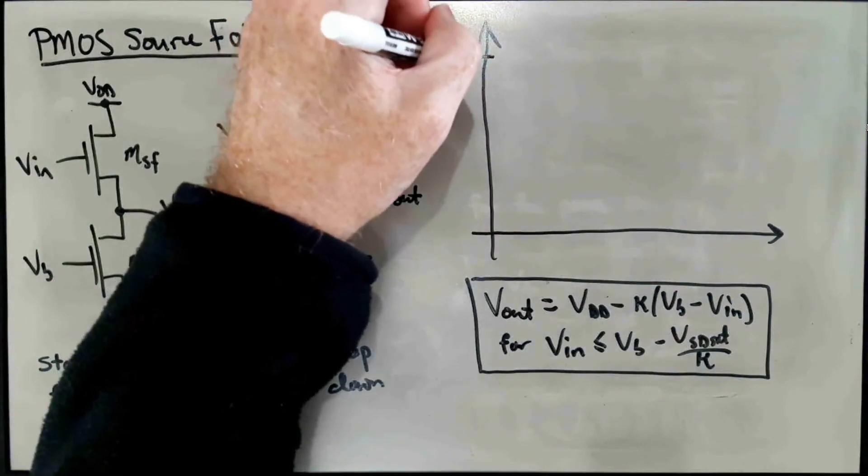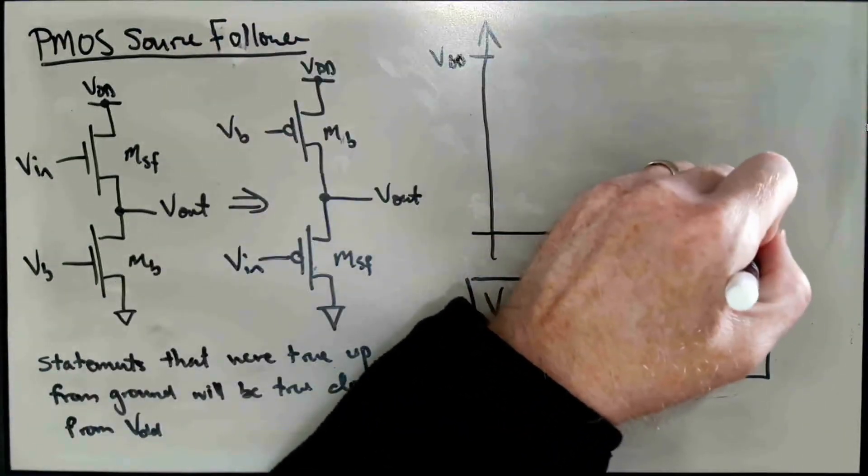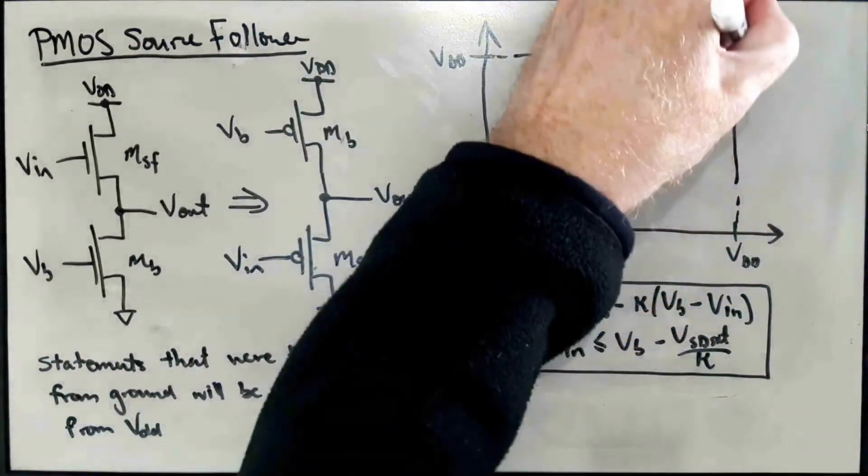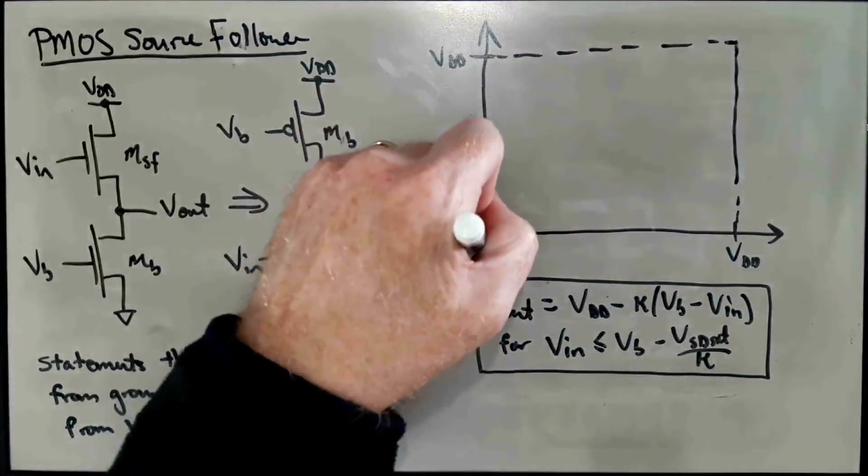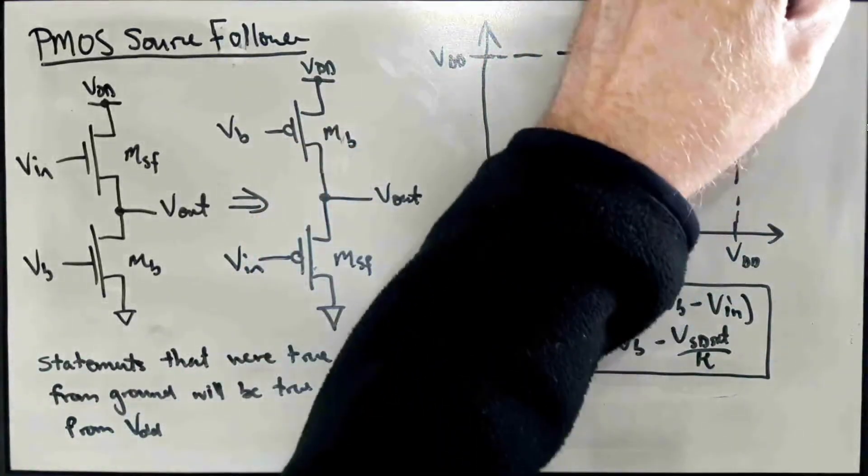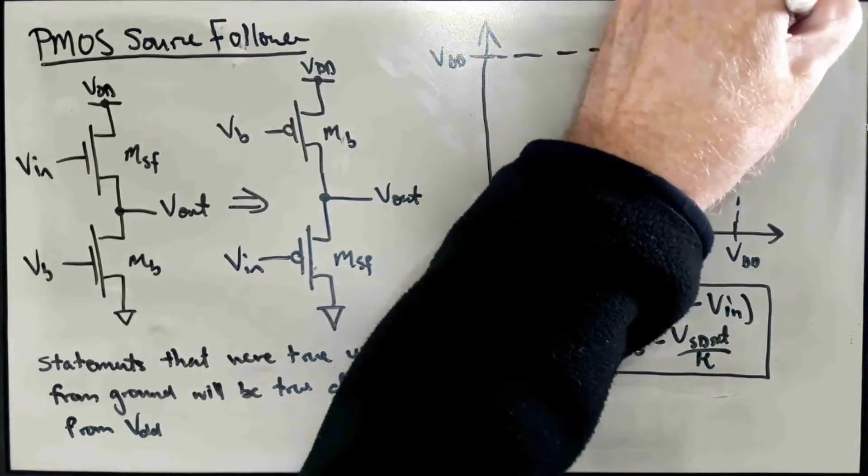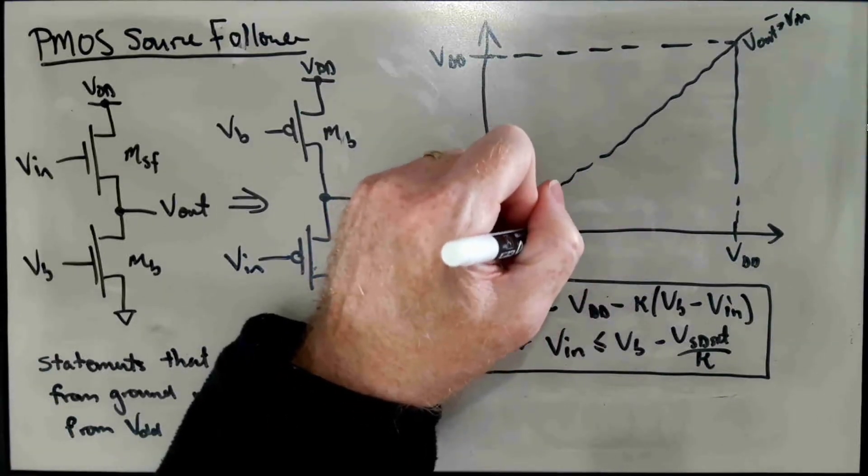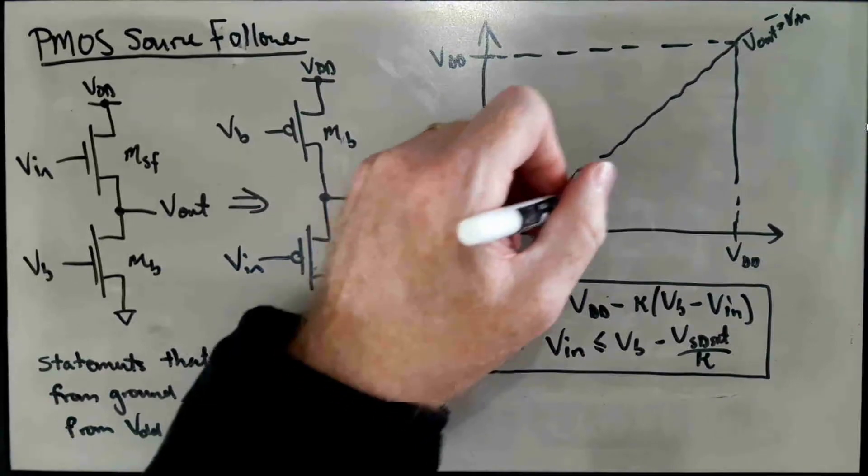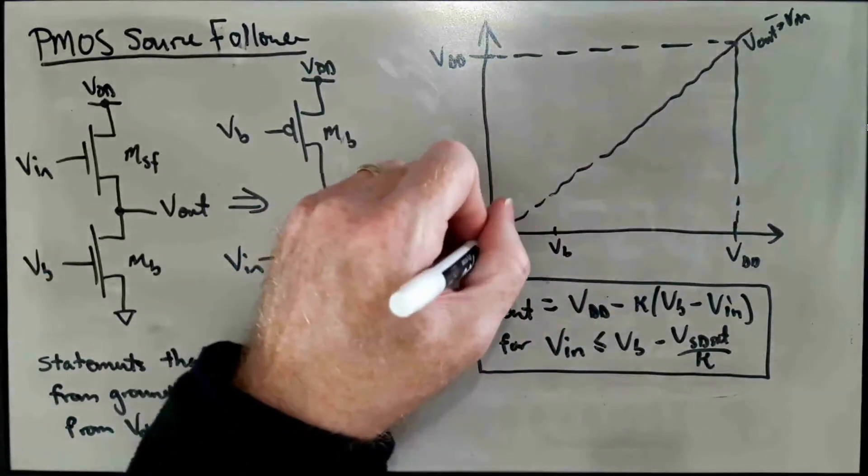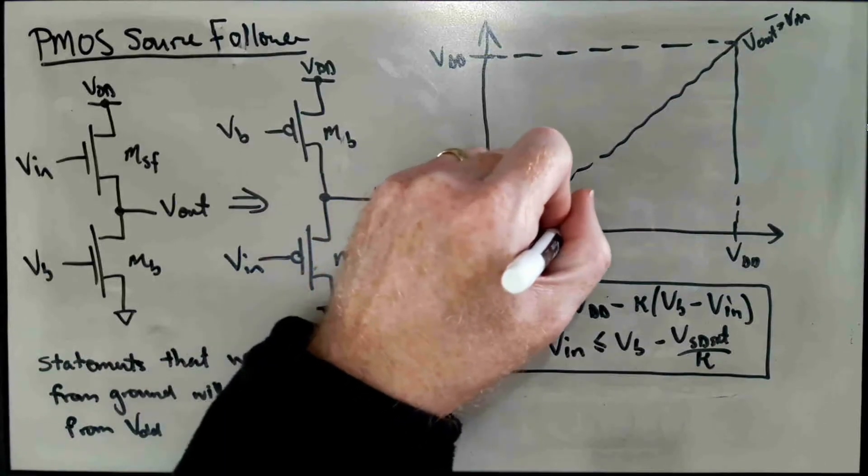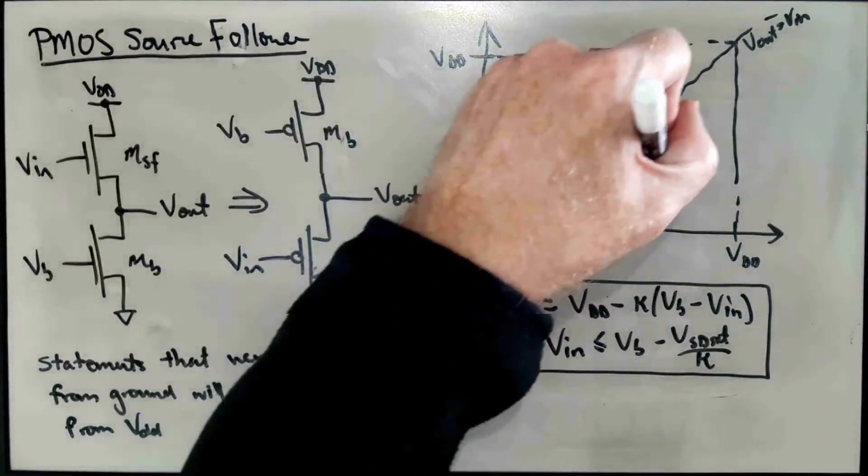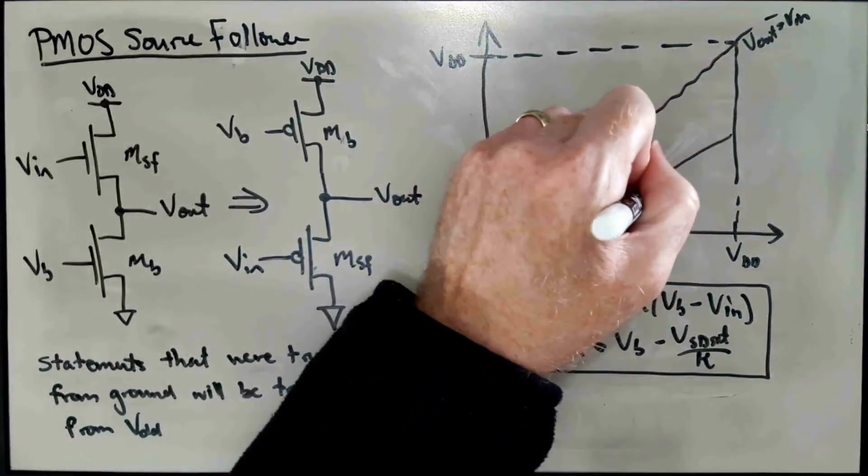So let's just sketch up the voltage transfer characteristic we had for the NMOS. This is VDD. This is VDD. And we have our box and our identity line. We have it equals VIN. And for the NMOS we had, let's say we had VB right here. And we had a characteristic that looks something like... it's got a slightly shallower slope in that. So something like that. Slope is Kappa.